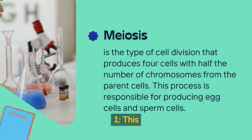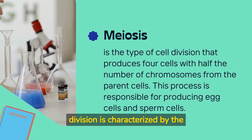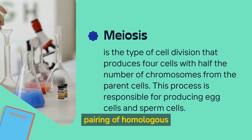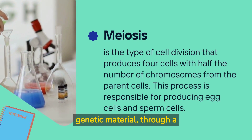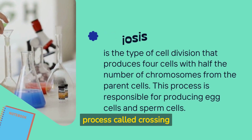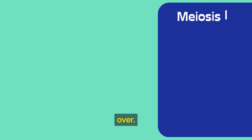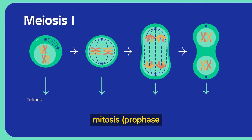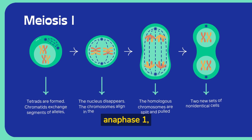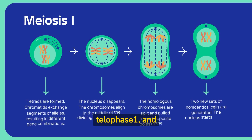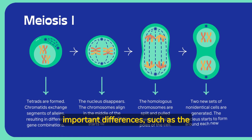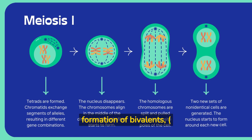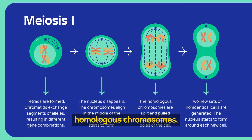Meiosis I is characterized by the pairing of homologous chromosomes and the exchange of genetic material through a process called crossing over. It consists of the same stages as mitosis — prophase I, metaphase I, anaphase I, telophase I, and cytokinesis — but with important differences, such as the formation of bivalents (pairs of homologous chromosomes) and the separation of homologous chromosomes instead of sister chromatids.